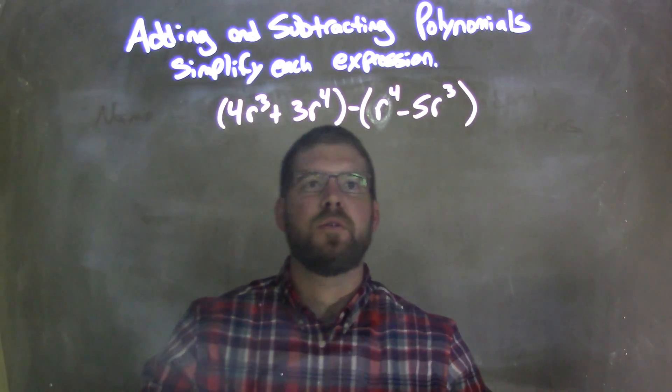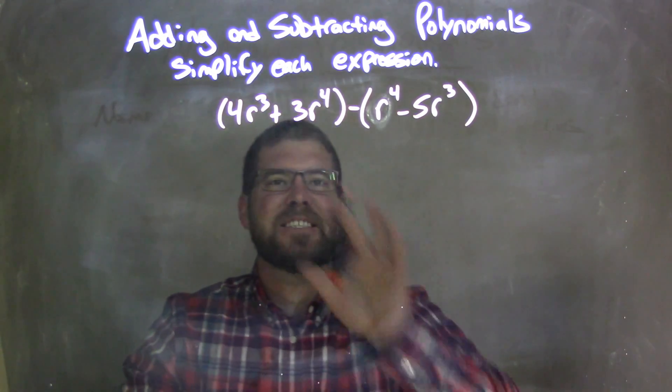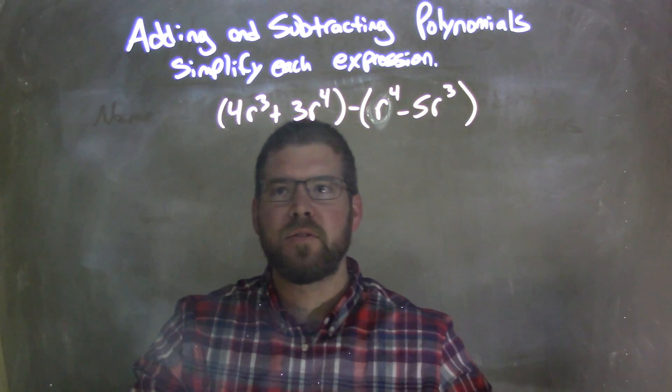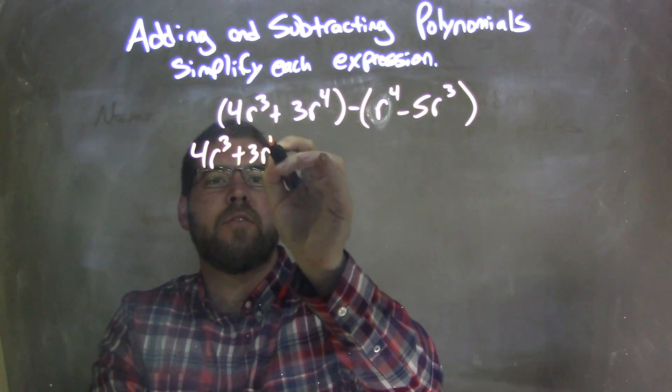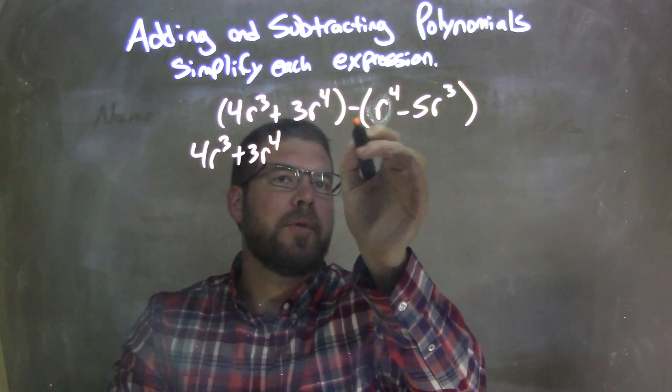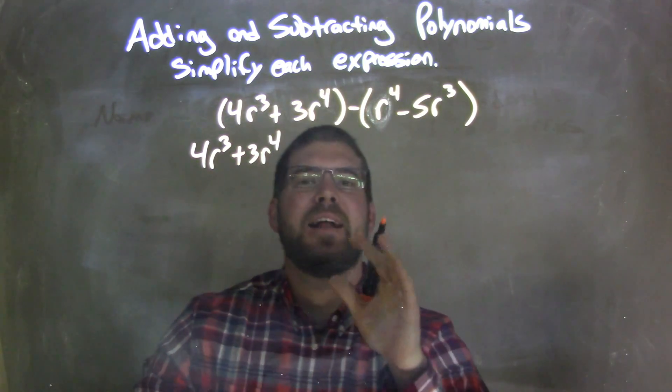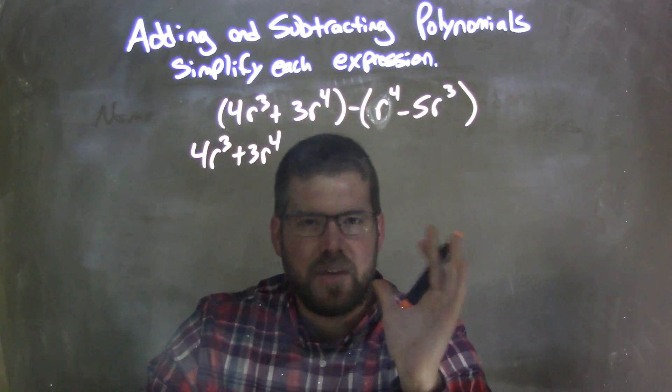If I wanted to simplify this, we look at each parentheses, and I can't simplify within each of these parentheses. So I'm going to rewrite this as 4r³ + 3r⁴ first, but now I'm going to distribute that minus sign, and I'm going to make it adding a negative instead of subtracting, because I prefer that.